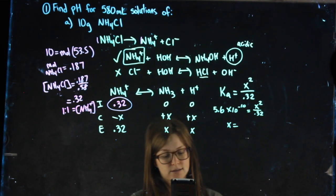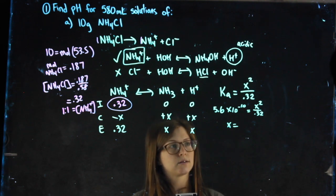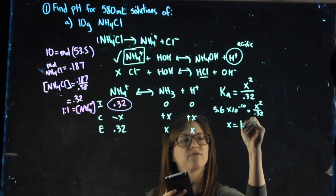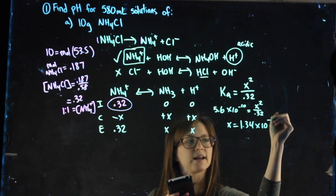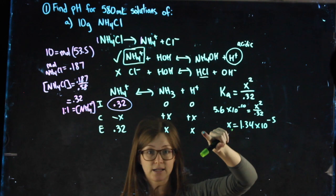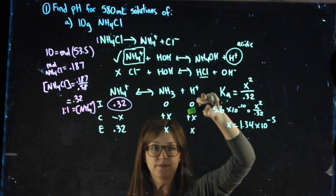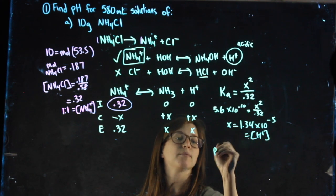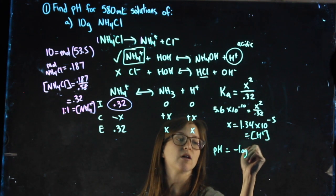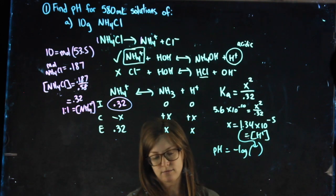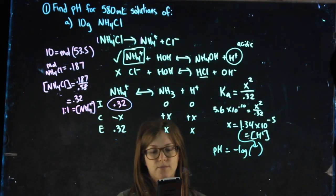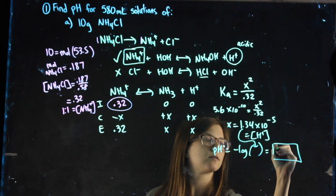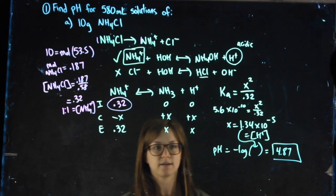So I solve for x and get 1.34 times 10 to the negative 5. My x value is my H+ value — my ICE chart is here to remind me of that. So when I want to find the pH, I take the negative log of that value and I get 4.87. That's it.